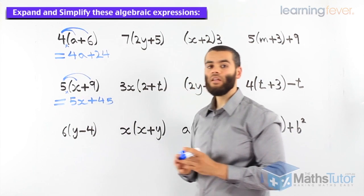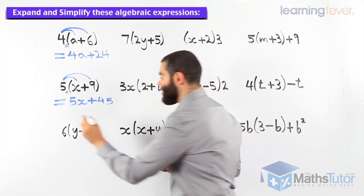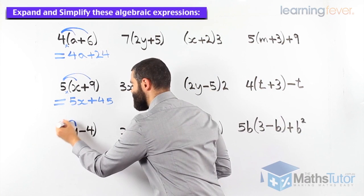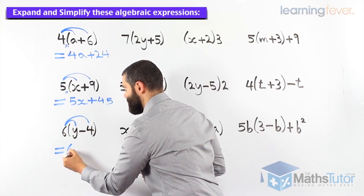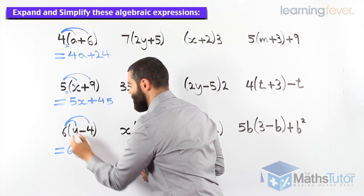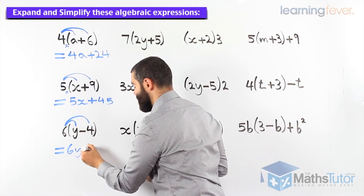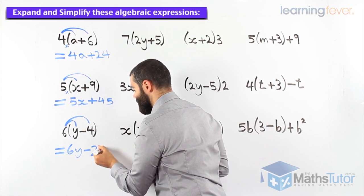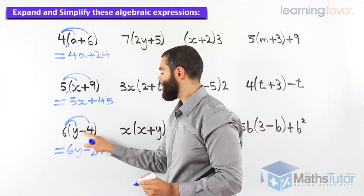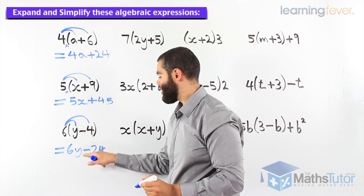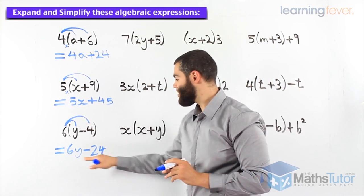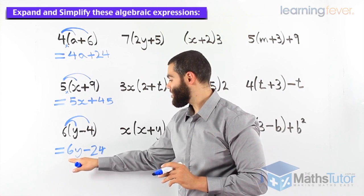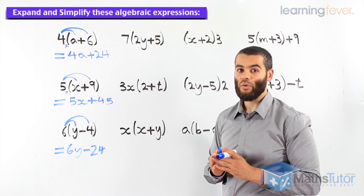This one here. Again, expanding. Six times y, and six times negative four. Six times y, six y. Six times negative four, negative twenty-four. Six times four, twenty-four, and the negative goes down. Can we go any further? We can't, because these are not like terms. So our final answer, six y, take away twenty-four.